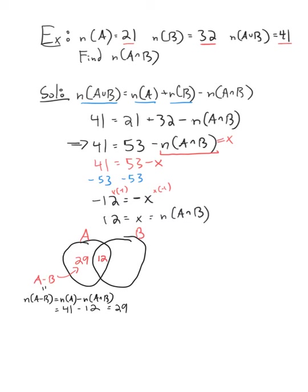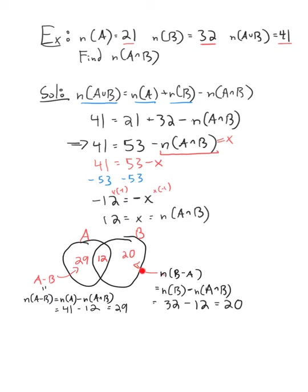Similarly, for B minus A — the stuff that's in B but not in A — that's everything in B minus what's in the intersection A intersect B. So B has 32 things, the intersection has 12, so there are 20 elements in just B alone. So B has 32 elements in total: 12 that are in A as well, and 20 that are not in A. So here's a nice Venn diagram of that.